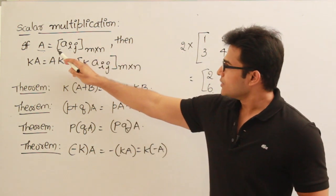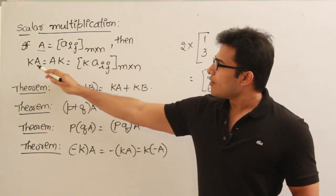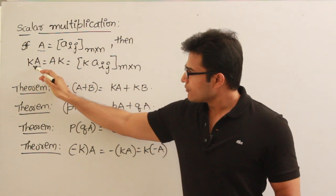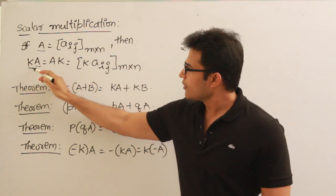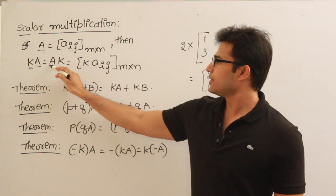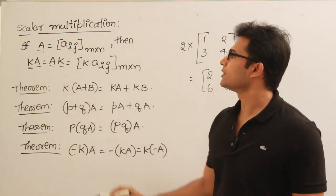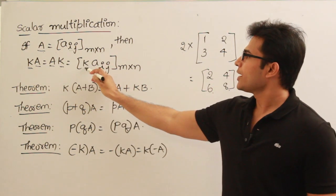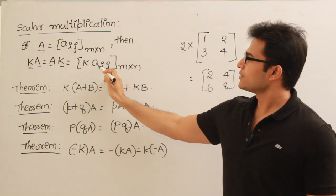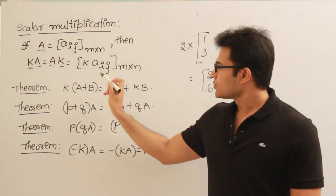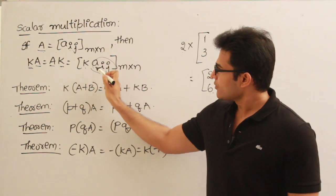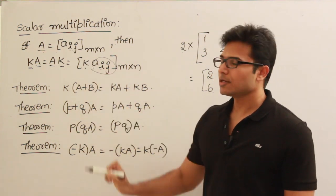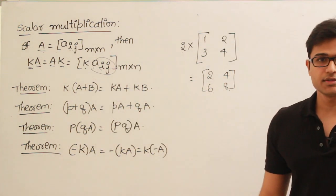Then if this is A, multiplying this matrix with the constant k is nothing but multiplying every element in the matrix with the constant k. We are taking every element in the matrix and multiplying with constant k. That is called scalar multiplication.